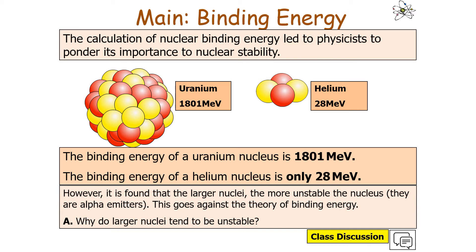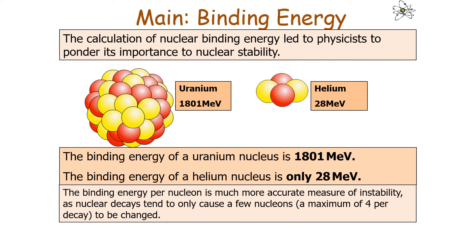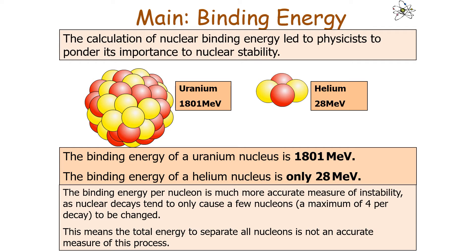So why do larger nuclei tend to be unstable? The stability of a nucleus is not based on the total binding energy, but rather the binding energy per nucleon, which equals the binding energy divided by the number of nucleons. This tells us how tightly bound each nucleon is on average. Binding energy per nucleon is a much more accurate measure of stability, because nuclear decays only involve a few nucleons — at most four in alpha decay — so the total energy to separate all nucleons is not an accurate measure of the decay process.